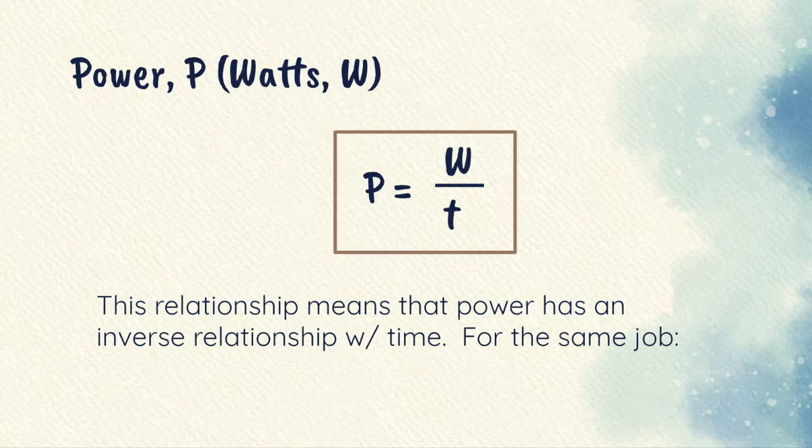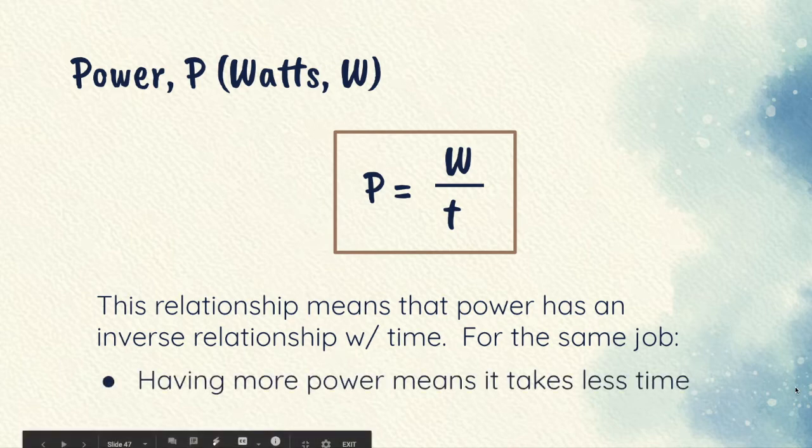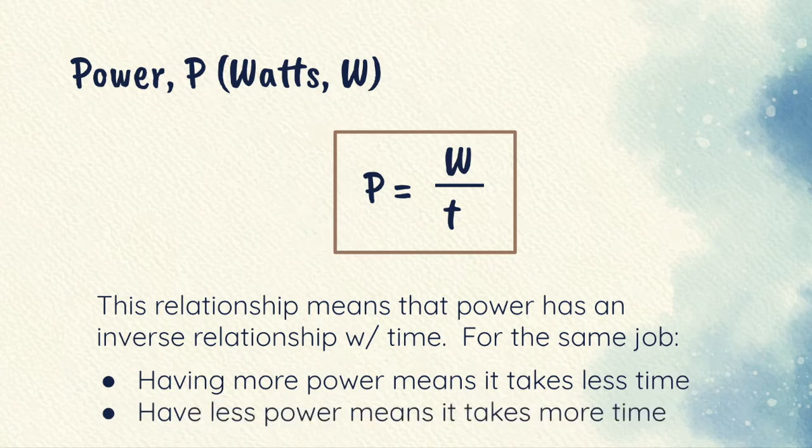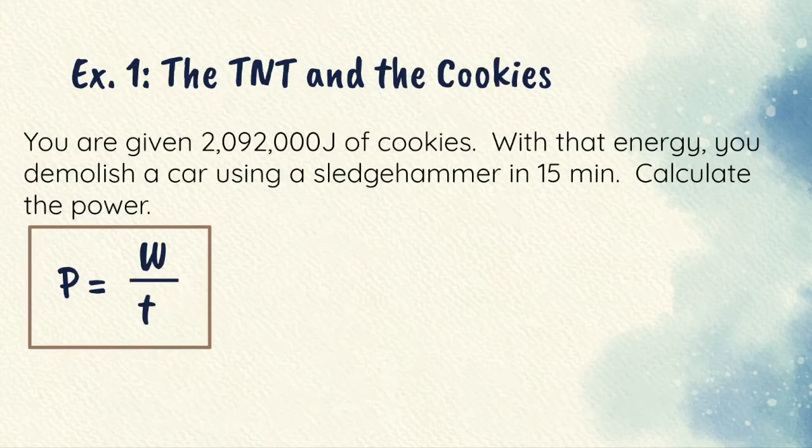But guys, we already know this from real life. If we exert more power, then that job takes less time. If my job was running up and down the stairs, exerting more power means I get up to the top of the stairs in less time because I was literally running faster. Whereas if I put in less effort, I put in less power, then it takes me more time. That's an inverse relationship. So if power goes down, time goes up. So I'm going to do some quick examples here.